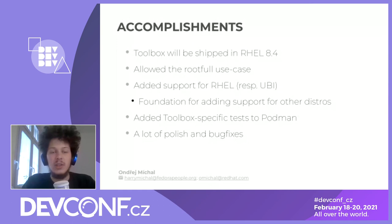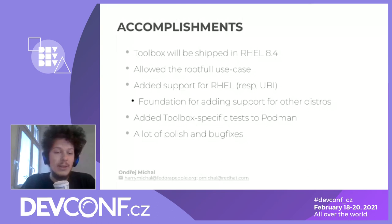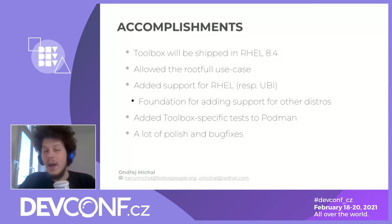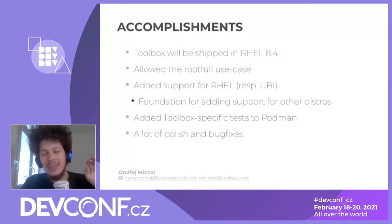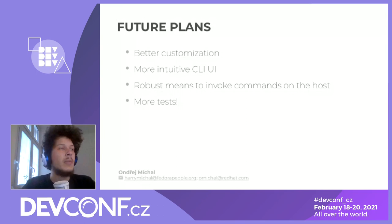For future plans: customization — you cannot really change the default behavior of Toolbox, which is something a lot of users complain about, and we want to change that. We also want to make the CLI user experience more intuitive. We want to add means to invoke commands on the host — imagine a scenario where you open your terminal and instead of the host shell you get a container. For that use case to work, there needs to be a comfortable way to run something like rpm-ostree from inside the container to control the host.